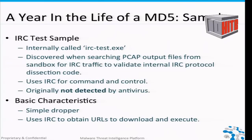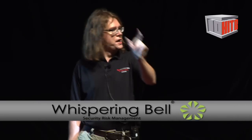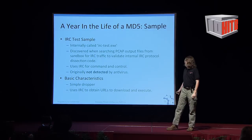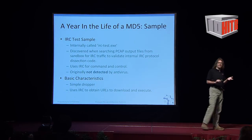This particular sample is one of our favorites — we internally call it IRC test. We discovered it when looking for IRC traffic to test our protocol analysis code. It uses IRC for command and control, and significantly, one year ago it was not detected by antivirus. It's a simple dropper — all it does is reach out to the network, get a URL, download it, and run it. It uses IRC to grab URLs and execute them. Very simple — about 60 kilobytes of code.